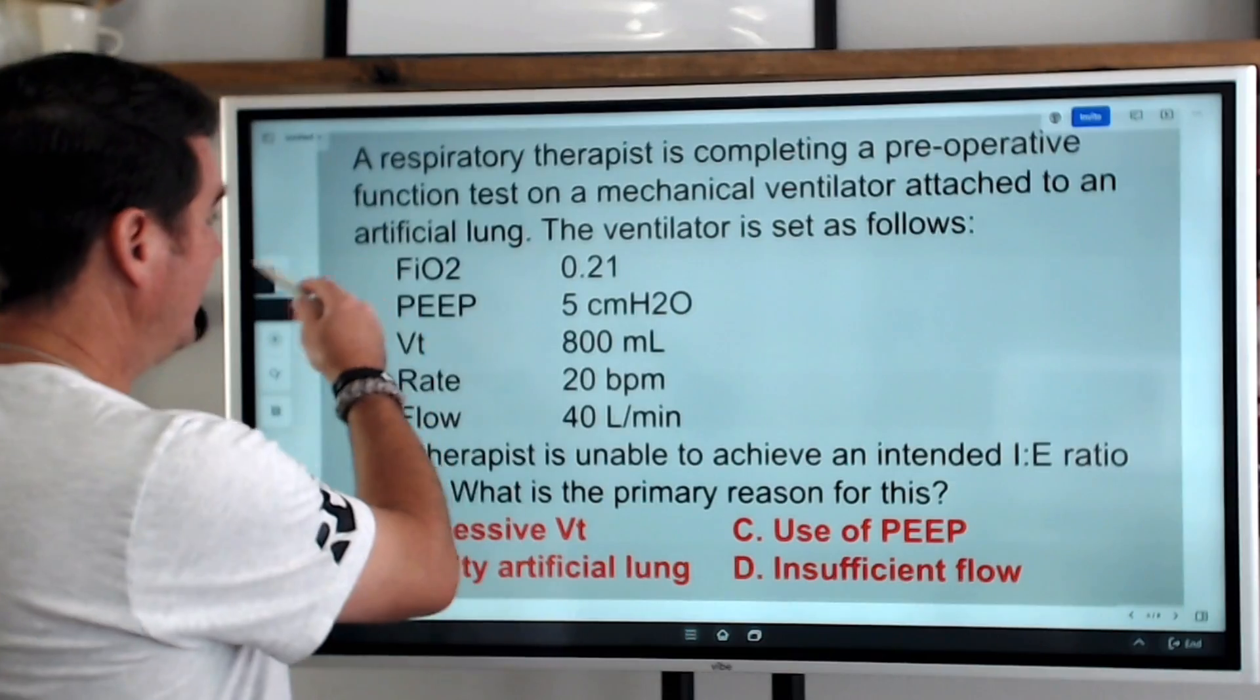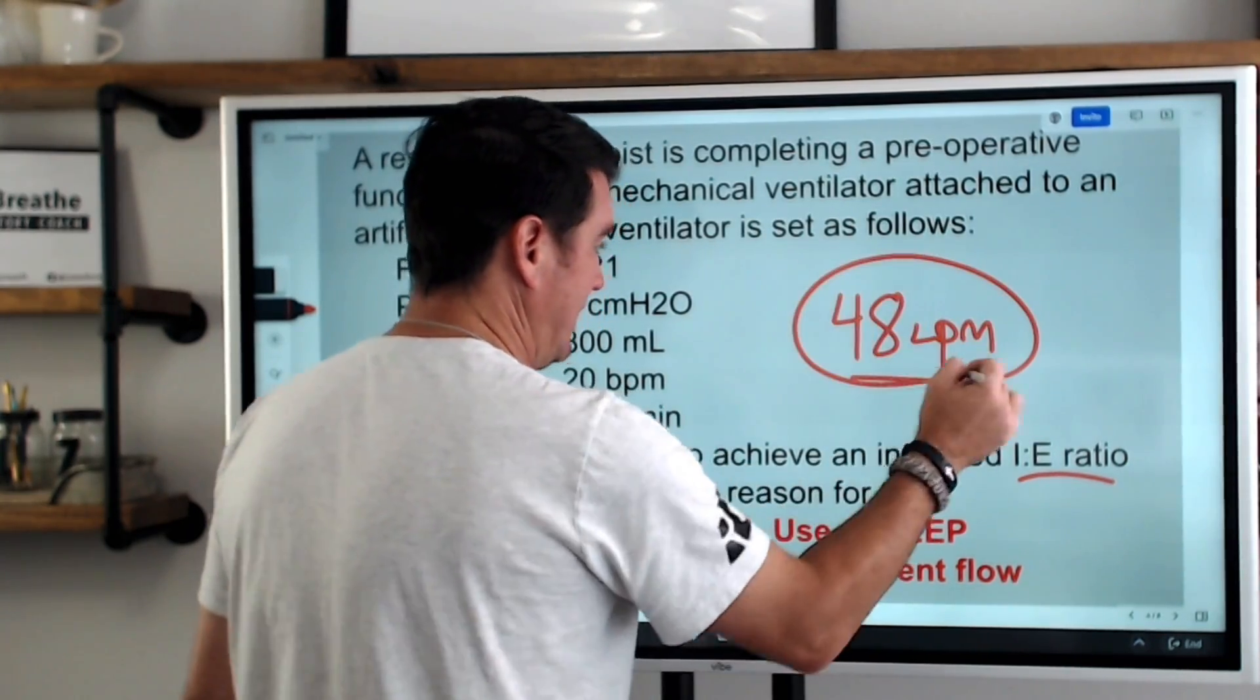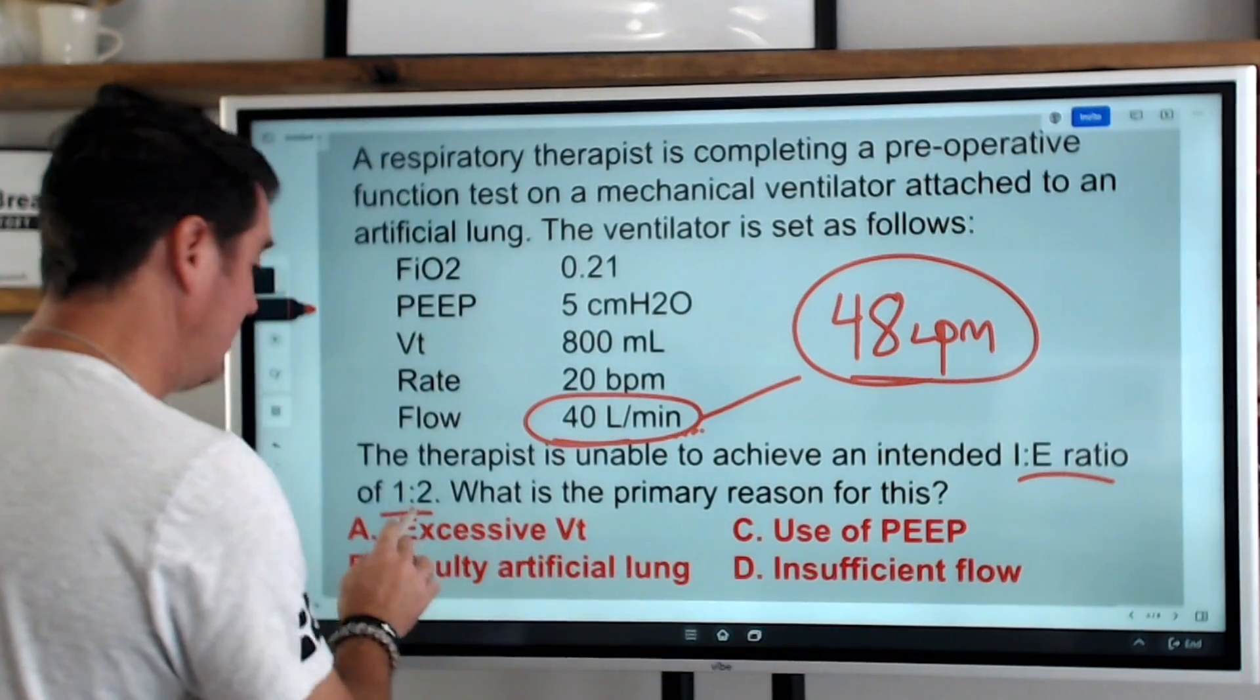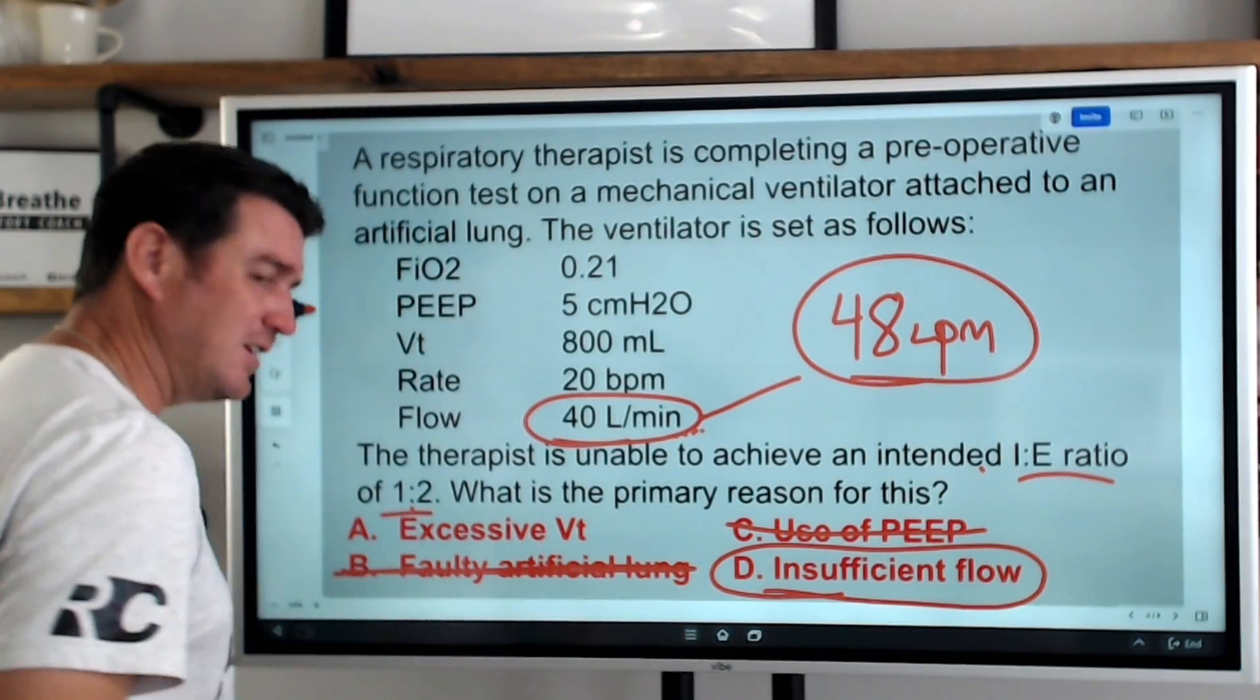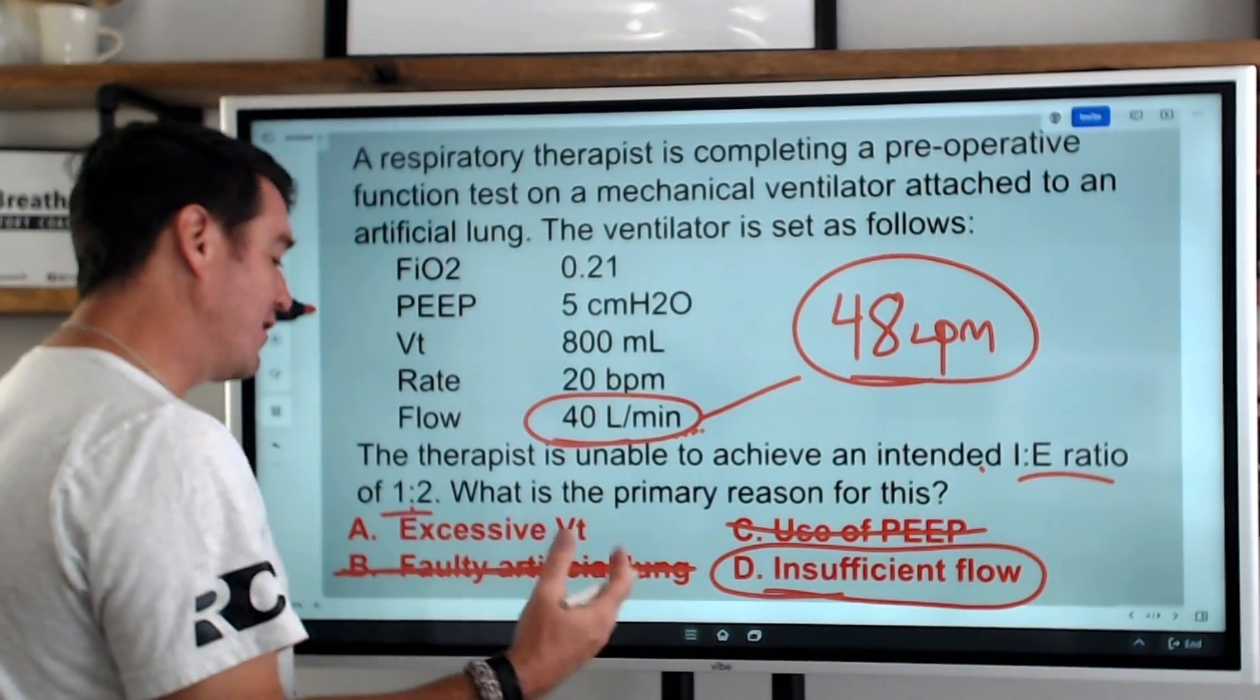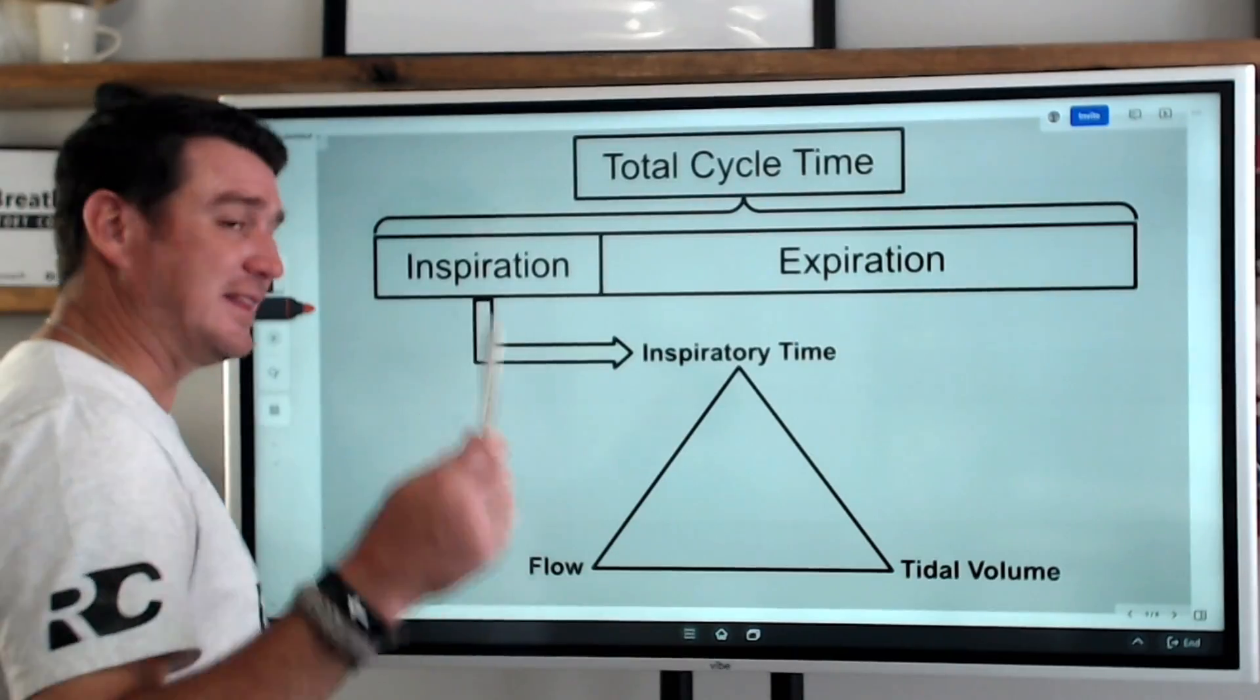Let's go back to the question here. All the settings back here. What is the primary reason that we cannot achieve this I to E ratio of one to two? Remember, we know that we need 48 liters per minute, but we are set on 40 liters per minute. There's a problem. This is why the one to two is not being achieved. The answer here is insufficient flow. I already told you the use of PEEP. PEEP has nothing to do with I to E ratio. The faulty artificial lung, nothing to do with I to E ratio. It may have something to do with a leak. If you can't get a return volume back, maybe you have a faulty artificial lung, but other than that, no. And it's not an excessive tidal volume because we are testing this tidal volume. Okay? So it's not a tidal volume. The problem here is we don't have an adequate flow, which I told you 90% of the time I to E ratio questions think flow. This is what we're talking about.